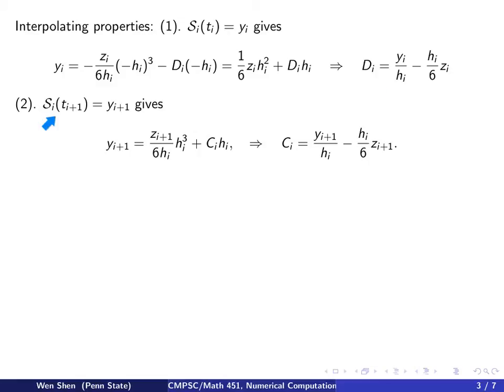And next, the other interpolation property on the interval from ti to ti plus 1. On the right, at ti plus 1, my si must interpolate the value yi plus 1. So, putting in x equals to ti plus 1 in the expression of si of x, I get this expression by just some very simple algebraic calculation. And we see that di is not present, and ci is the only one here. And I can write ci in terms of the others, some simple manipulation now gives me this form.